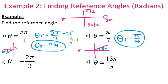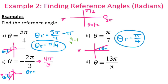Negative 2 pi over 3: I'm going to find a positive coterminal angle by adding 2 pi, since that's a full rotation in radians. So negative 2 pi over 3 plus 2 pi is 4 pi over 3. So 4 pi over 3 is past pi, and that's going to put us in the third quadrant again. I need to figure out how far past pi I've gone to get to 4 pi over 3. So for my reference angle, I take 4 pi over 3 minus pi — your reference angle is pi over 3.